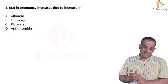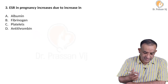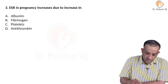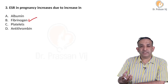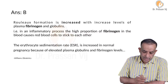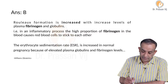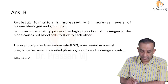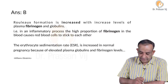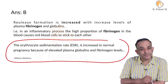Question number three: erythrocyte sedimentation rate in pregnancy increases due to the increase in which factor - albumin, fibrinogen, platelets, or antithrombin? The answer is fibrinogen. Fibrinogen increases in inflammatory conditions and causes red cells to become more sticky - that is, rouleaux formation increases. The ESR sedimentation rate is increased in normal pregnancy because of elevated plasma globulins and fibrinogen levels, as stated in Williams Obstetrics.